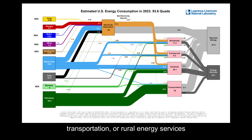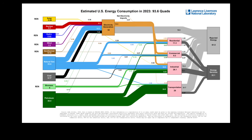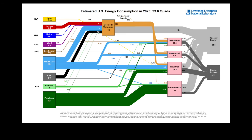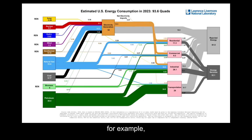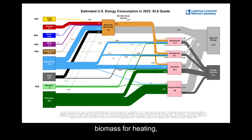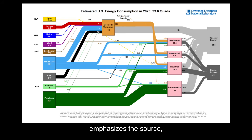energy services are important, but they are secondary in the classification. Renewable energy can be used in a variety of ways, but the central definition focuses on the renewability of the source. Applications refer to how energy is used — for example, solar panels for electricity or biomass for heating — but the term renewable itself emphasizes the source, not the use case.